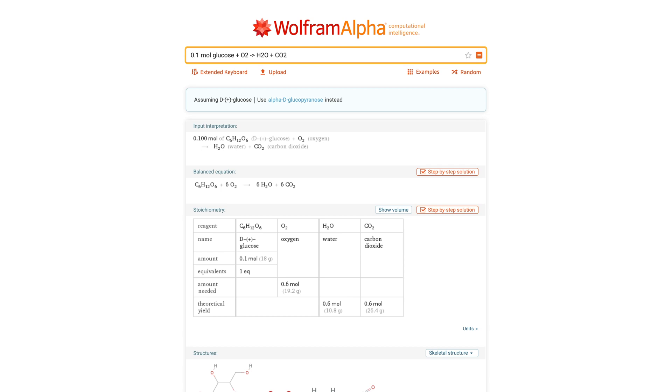Wolfram Alpha generates the balanced chemical equation and does stoichiometric calculations to provide the yield, along with the amount of other reactants needed.